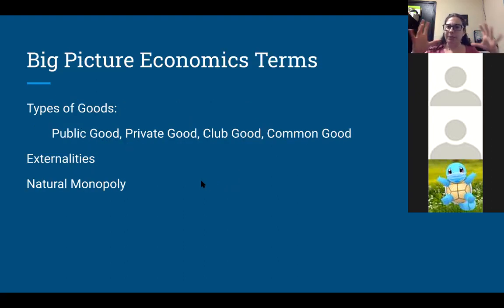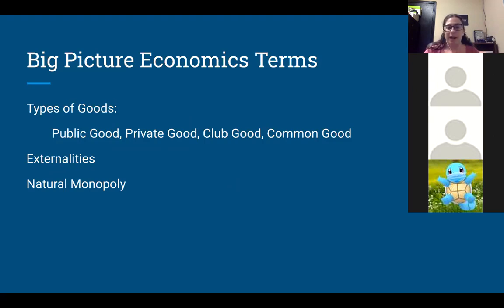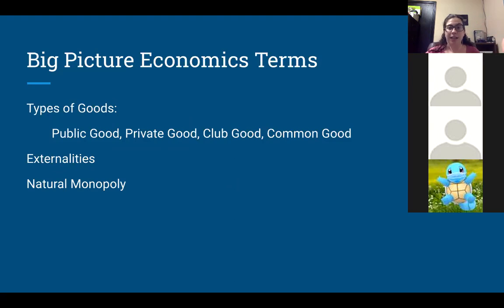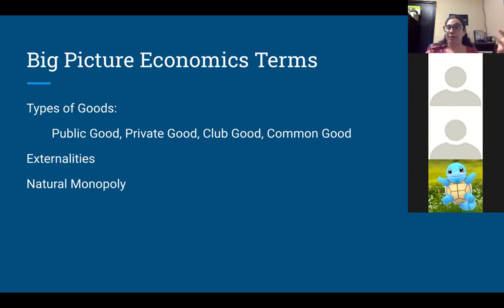There are three big economics terms we're going to talk about. The first is types of goods: public goods, private goods, club, and common. The second will be externalities, which is probably a word we may have heard before, maybe not in an economics context. And lastly, talking about natural monopolies and how they're different from like an Amazon-style monopoly.